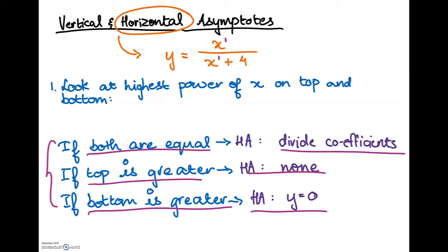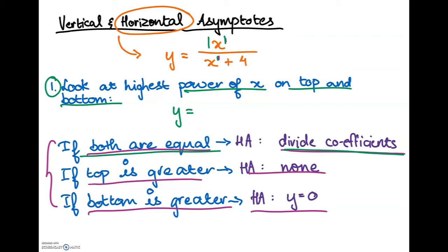Let's solve for the horizontal asymptote of our equation. The highest power of x on the top is 1, and on the bottom it's also 1. Since both are equal, we divide the coefficients. The coefficient of x on top is 1, and the coefficient of x on the bottom is also 1, because there's no number in front of them. Dividing the coefficients gives 1, so the final answer for the horizontal asymptote is y equals 1.